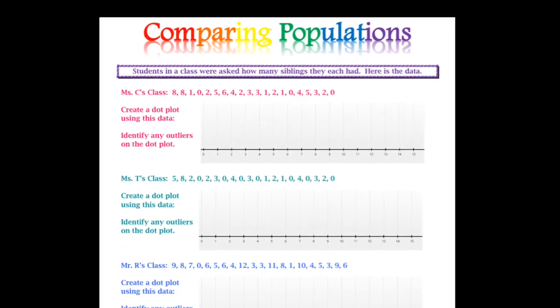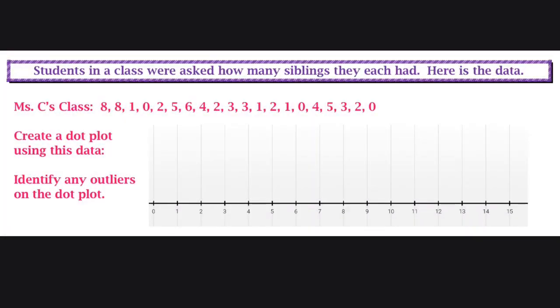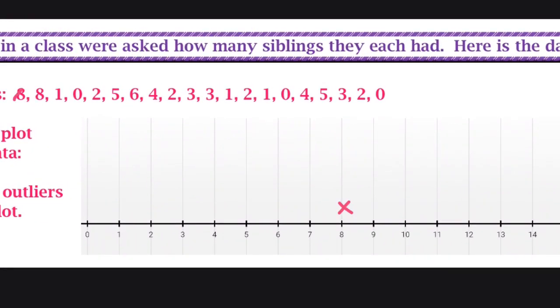We have Miss C, Miss T, and Mr. R. We're going to first take the data from Miss C's class and plot it on a dot plot. You can use an X or a circle dot, whichever is more convenient for you. Just make sure you don't forget any data points.